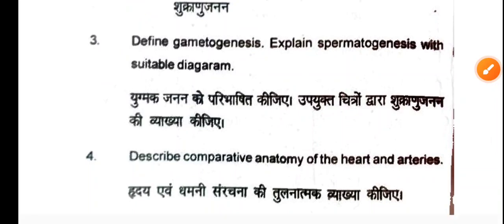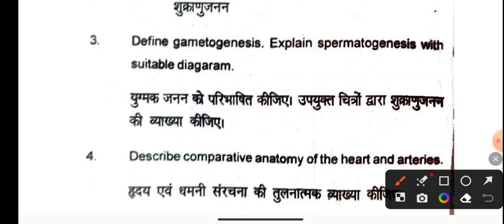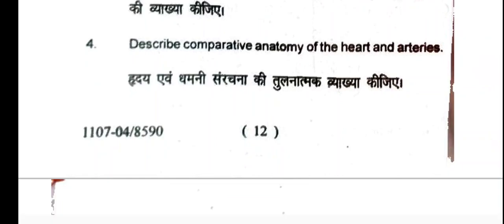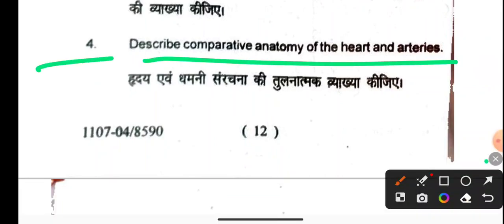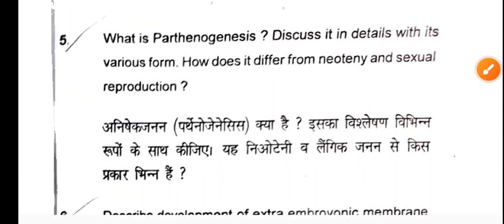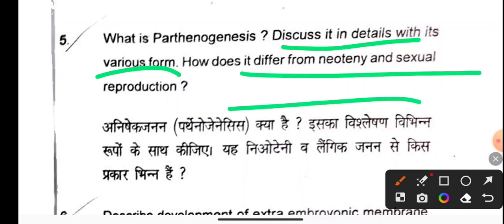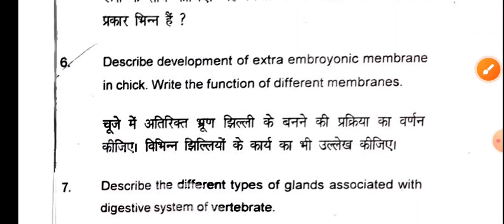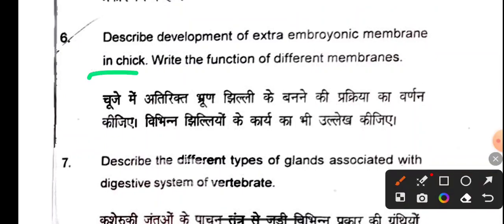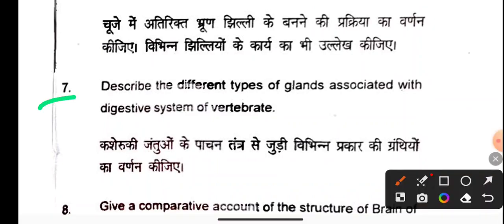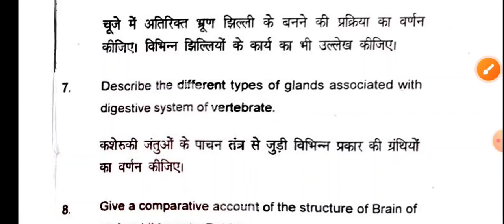From question number 3 onwards are the detail long questions, and we have to write any 3 out of those. Question 3 asks to explain spermatogenesis with suitable diagrams. Question 5 asks to describe comparative anatomy of the heart and arteries. Question 6 asks what is parthenogenesis — discuss in detail with its various forms and how it differs from normal sexual reproduction. Question 7 asks to describe the development of extra-embryonic membranes in the chick and write the functions of different membranes.